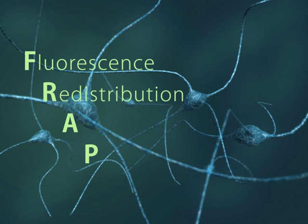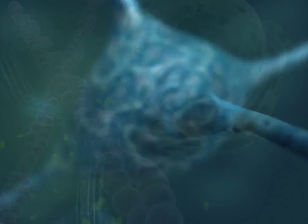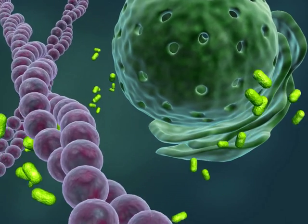FRAP, fluorescence redistribution after photobleaching, is used to gain quantitative information about the dynamic behavior of molecules in the cell.